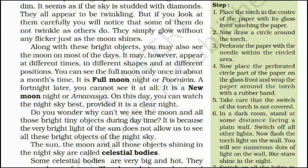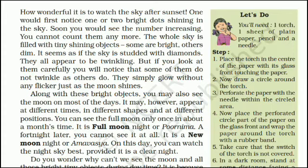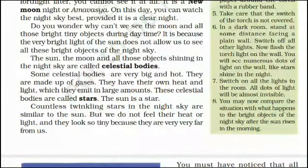Let's do an activity. You'll need one torch, one sheet of plain paper, a pencil and a needle. Step: Place the torch in the center of the paper with its glass front touching the paper. Now draw a circle around the torch. Perforate the paper with the needle within the circled area. Now place the perforated part of the paper on the glass front and wrap the paper around the torch with a rubber band. Take care that the switch of the torch is not covered. In a dark room, stand at some distance facing a plain wall. Switch off all other lights. Now flash the torch light on the wall. You will see numerous dots of light on the wall, like stars shining in the night.